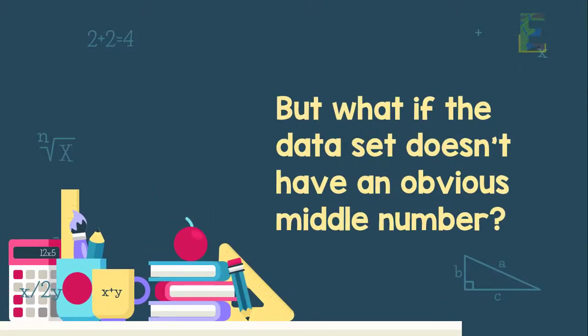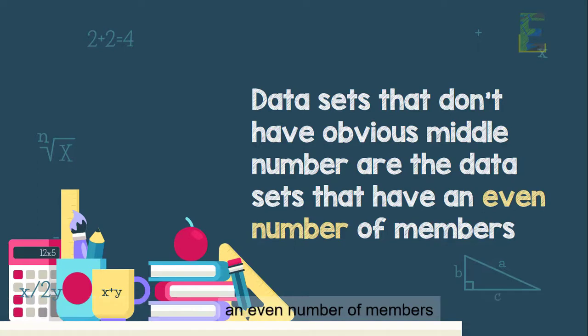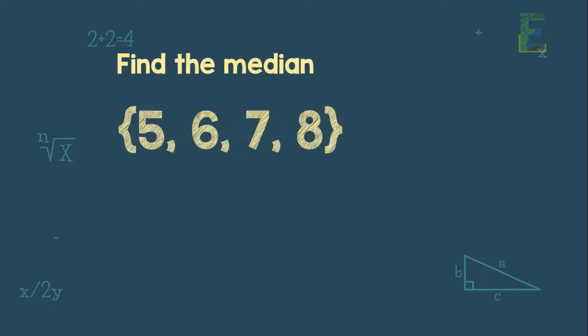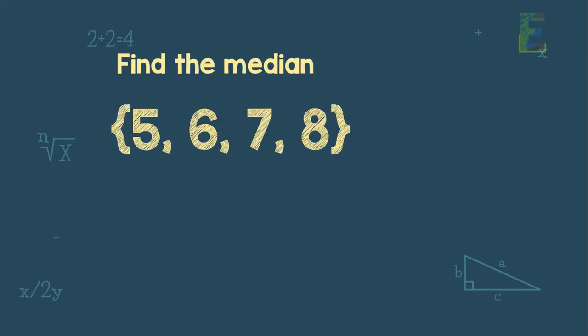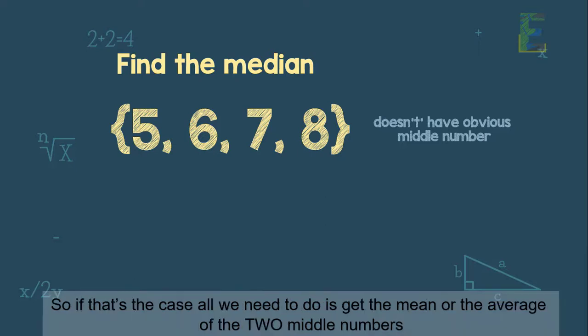But what if the data set doesn't have an obvious middle number? Data sets that don't have obvious middle number are the data sets that have an even number of members. For example, the data set 5, 6, 7, 8. Obviously, we cannot identify the middle number in this data set. So if that's the case, all we need to do is get the mean or the average of the two middle numbers.